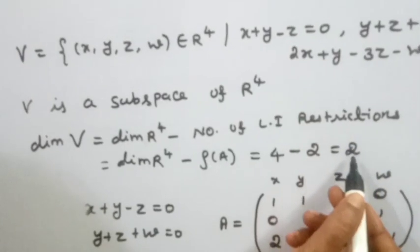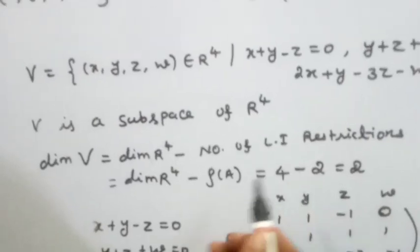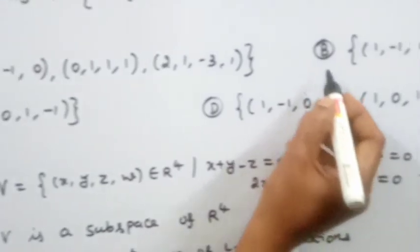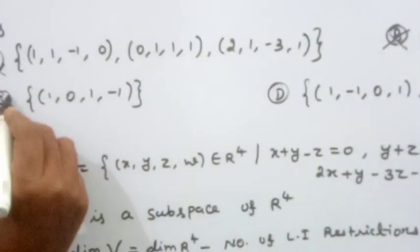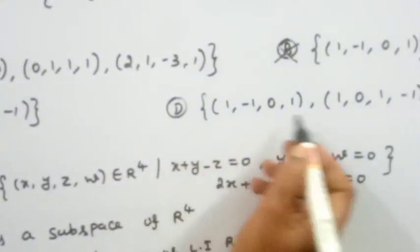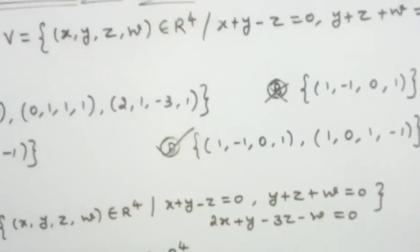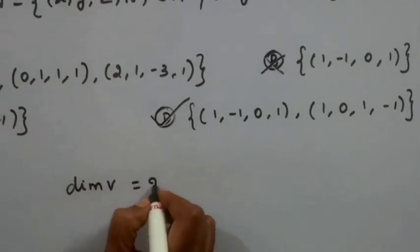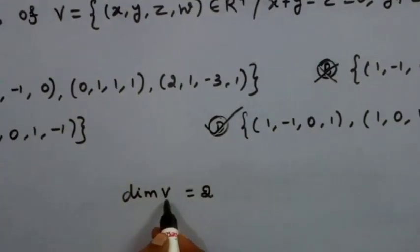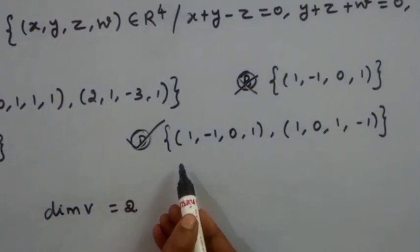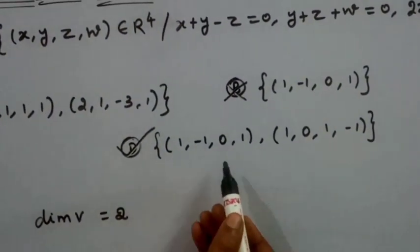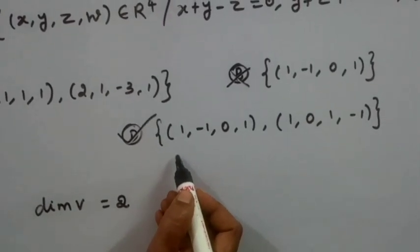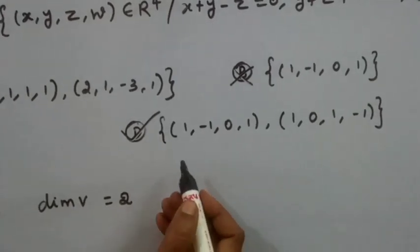Since dimension of V is 2, the basis must contain exactly 2 vectors. Looking at the options: option A has 3 vectors, option B has 1, option C has 1, and option D has 2 vectors. So option D is our candidate.